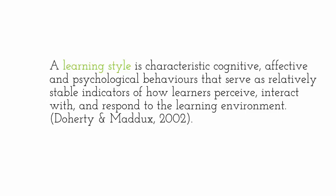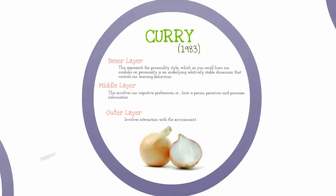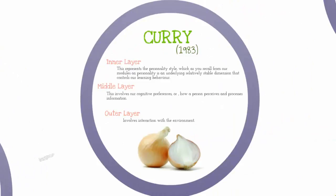Let's take a look at a few models of these learning styles. Curry's model used the analogy of the layers of an onion, with an inner, middle, and outer layer. Curry's inner layer represents your personality, which is an underlying relatively stable dimension that controls your learning behavior. The middle layer refers to cognitive preferences, or how you process information, and the outer layer involves your interaction with the environment.